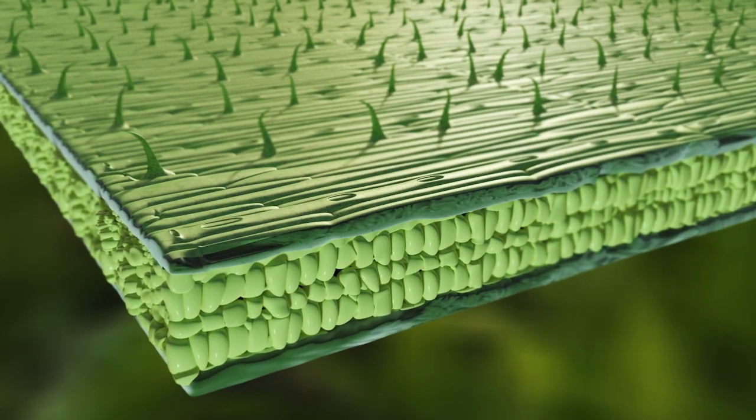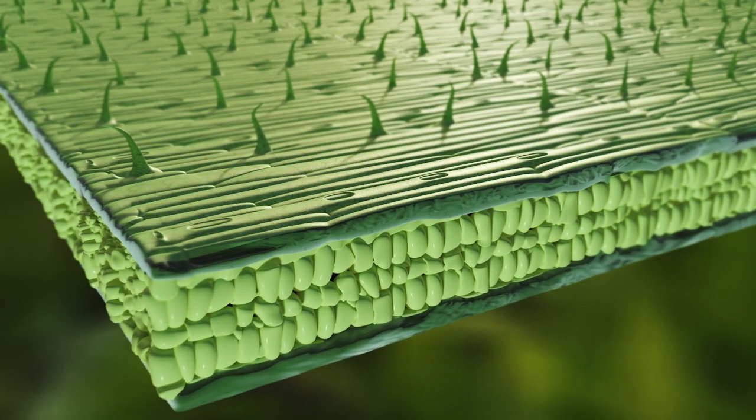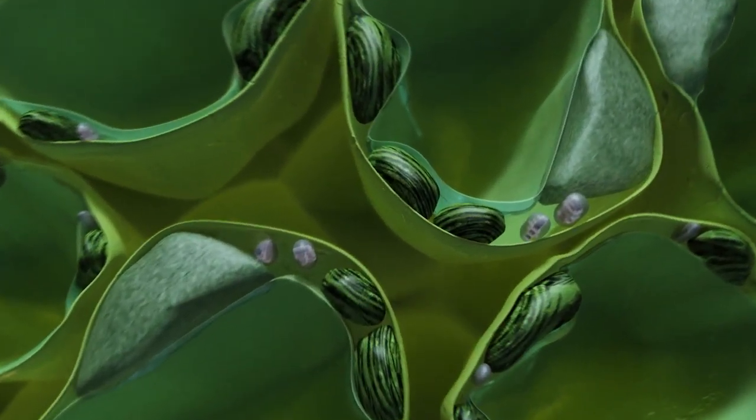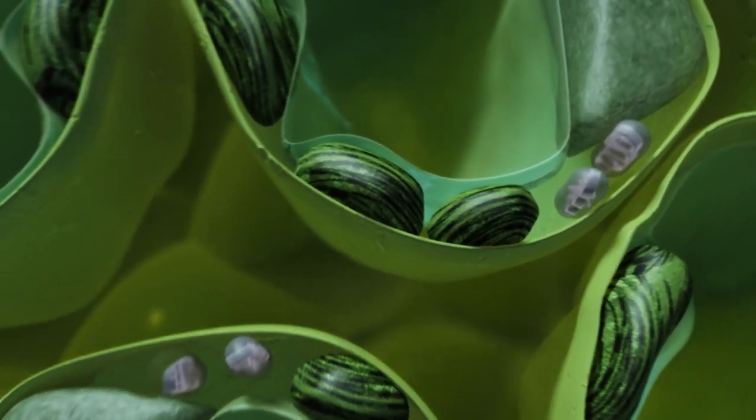Cells inside the leaf contain chloroplasts, specialized cell subunits that help to produce glucose, an essential building block of plant growth and grain yield.